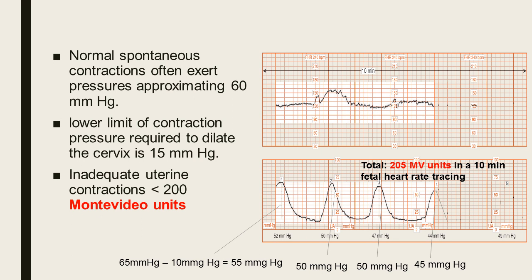One basic requirement before diagnosing dystocia is that uterine contractions must be adequate, achieving at least 200 Montevideo units. To determine the number of Montevideo units, we must obtain an intrapartal tracing. In this case, we have an intrapartal tracing of 10 minutes, with fetal heart rate at the top and uterine contractions at the bottom.